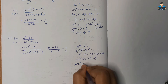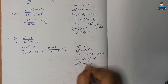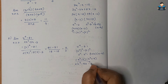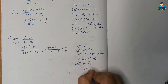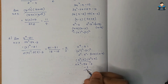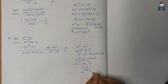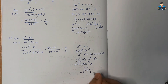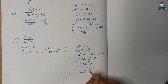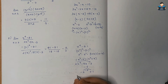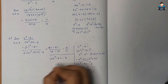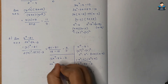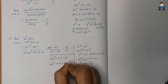Factoring denominator 2x² - 5x - 3: we need two numbers multiplying to -6 and adding to -5, which are -6 and +1. So 2x² - 6x + x - 3 = 2x(x - 3) + 1(x - 3) = (2x + 1)(x - 3).